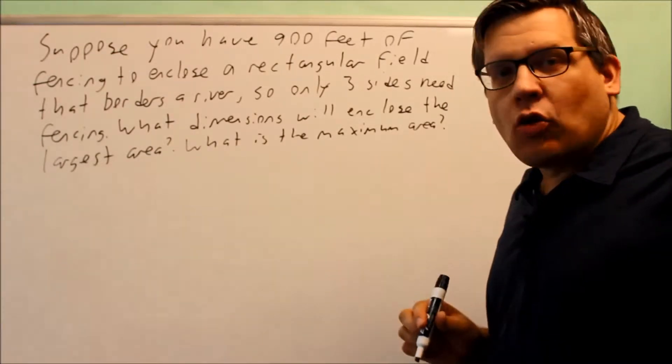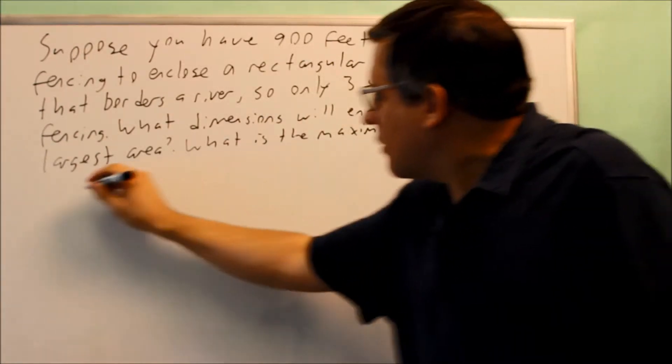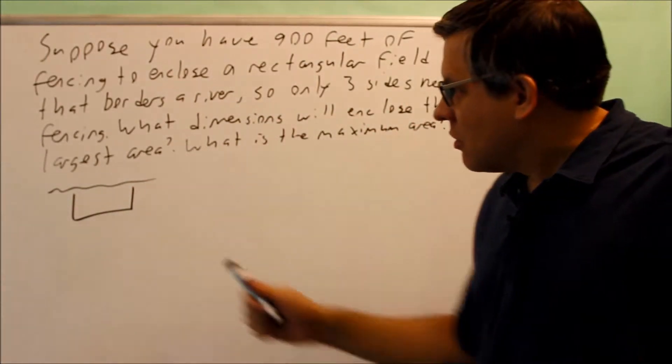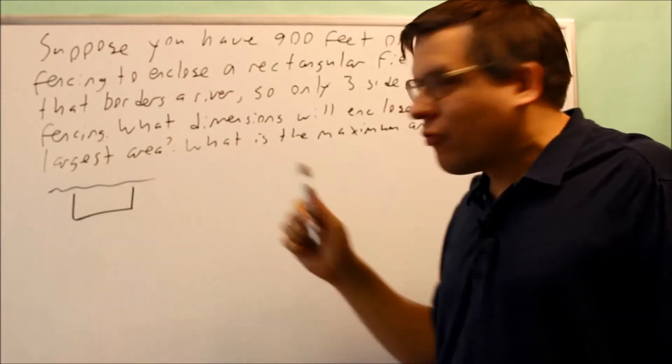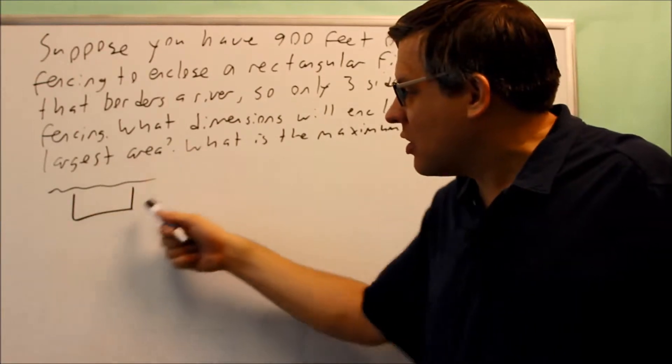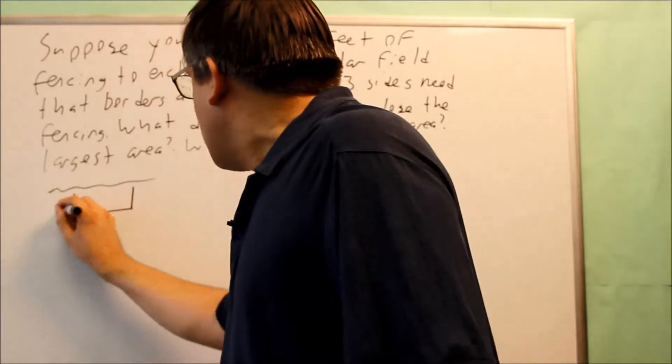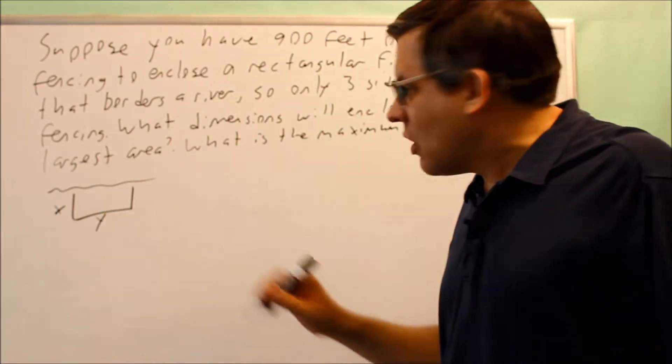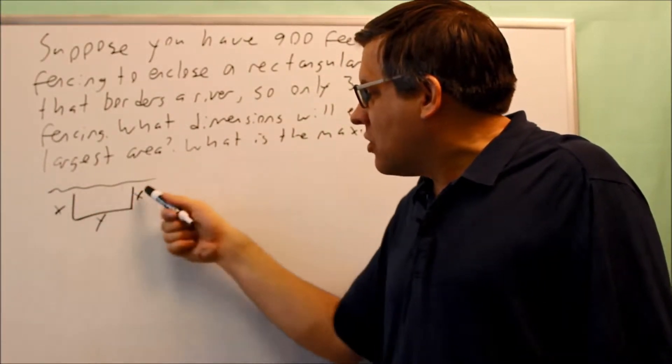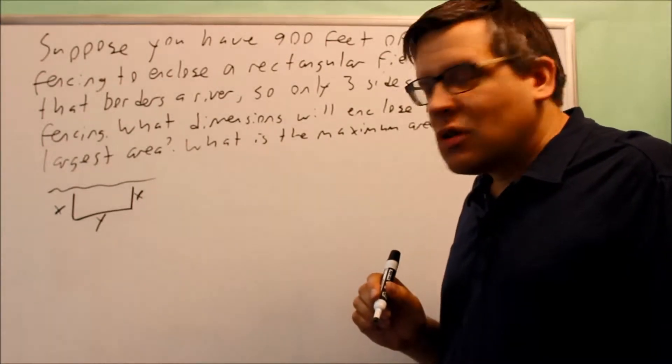First we have to come up with the equation to use. We have a river here and we have our three sides. The river is a natural boundary on the fourth side, so we don't need a fence along there. We want to set up some variables—I'm going to use x and y. I have two x's and I have one y.